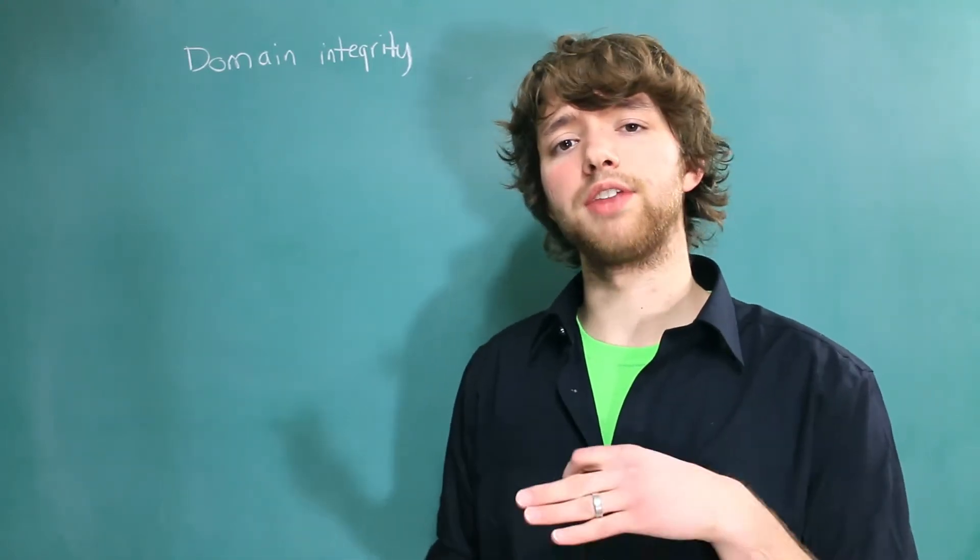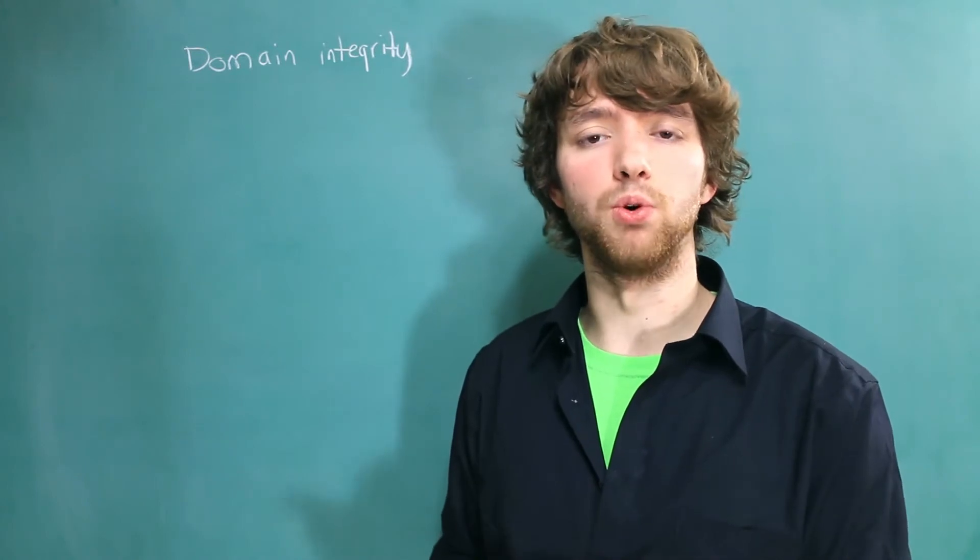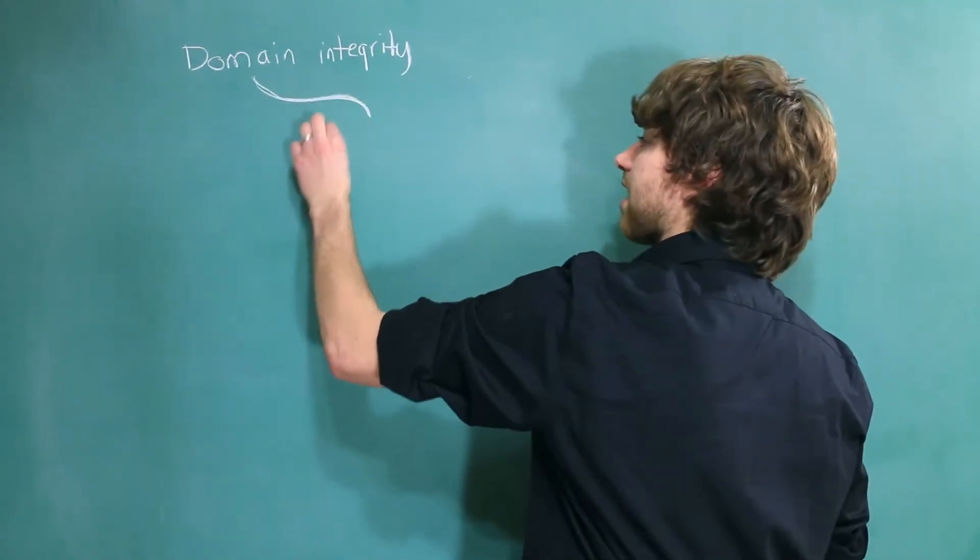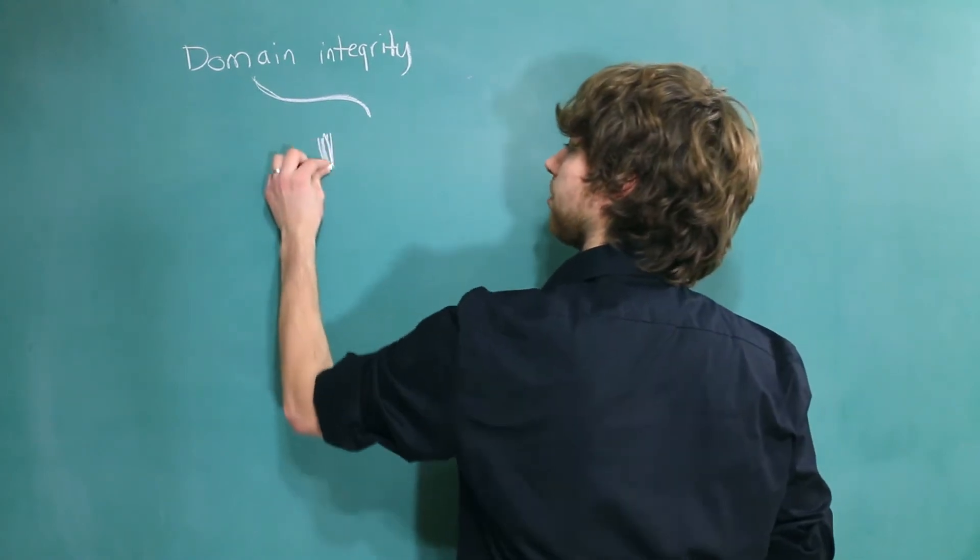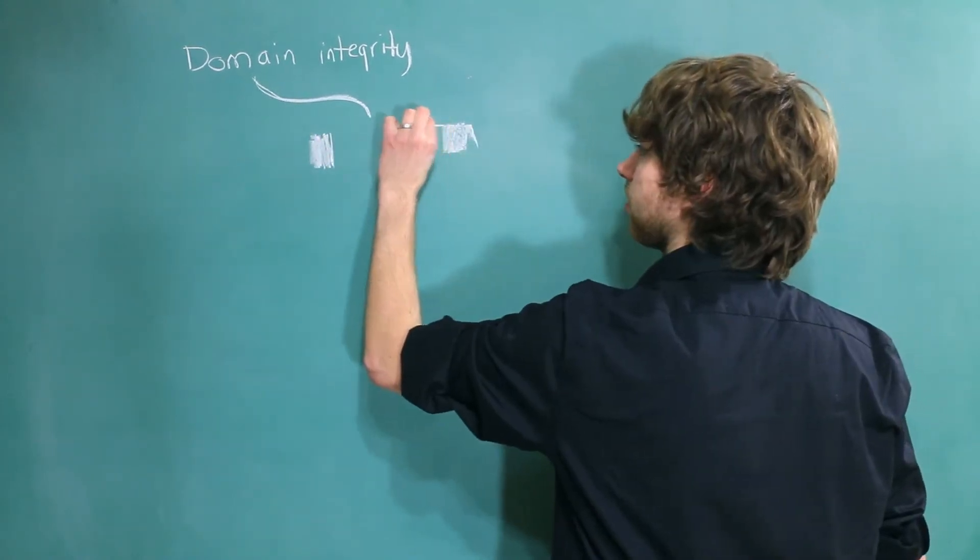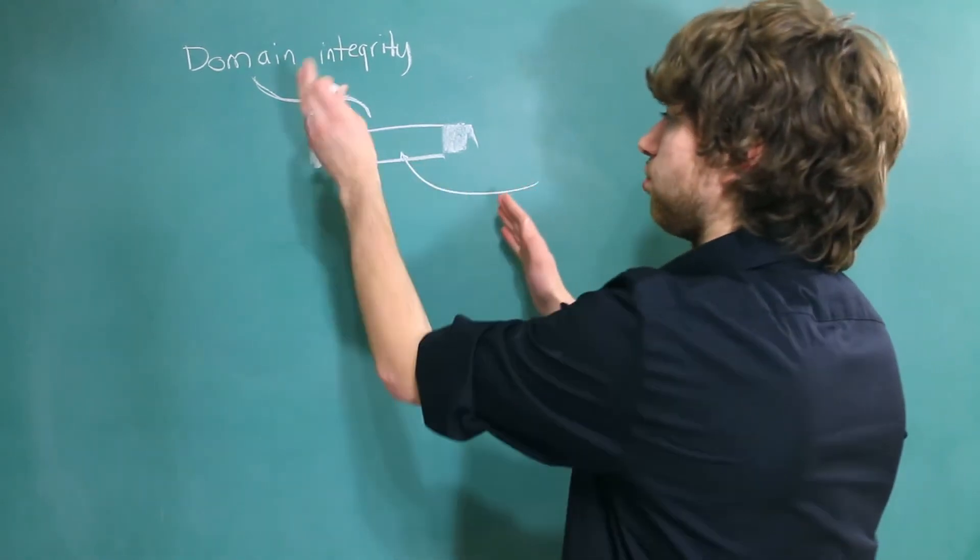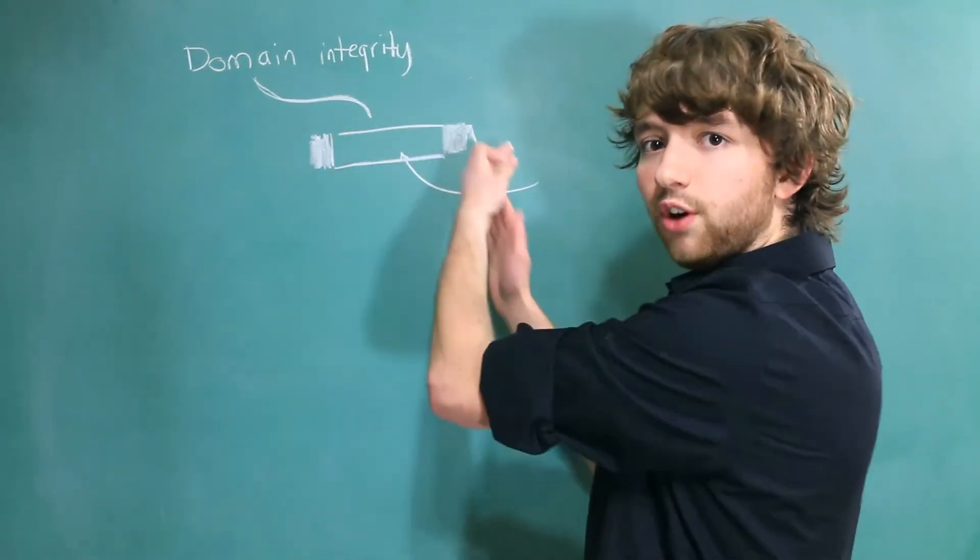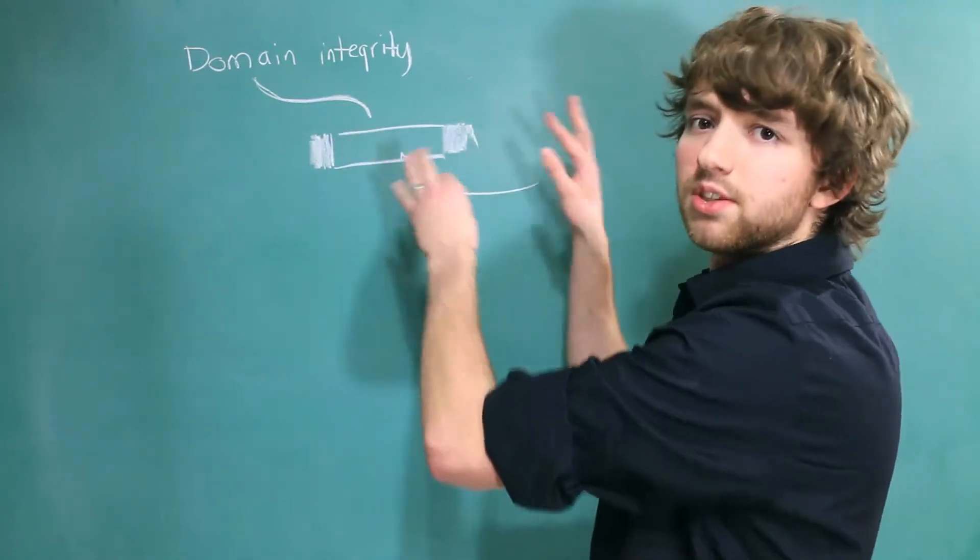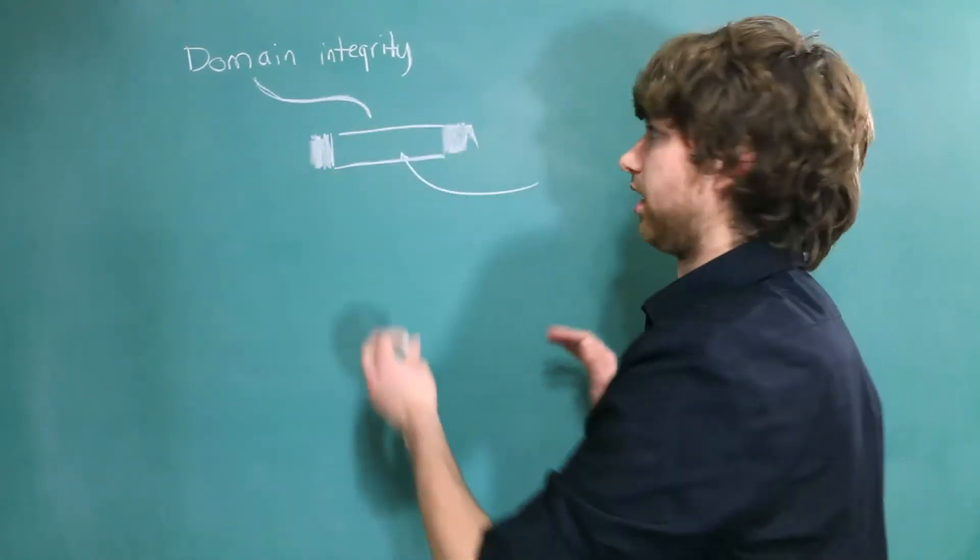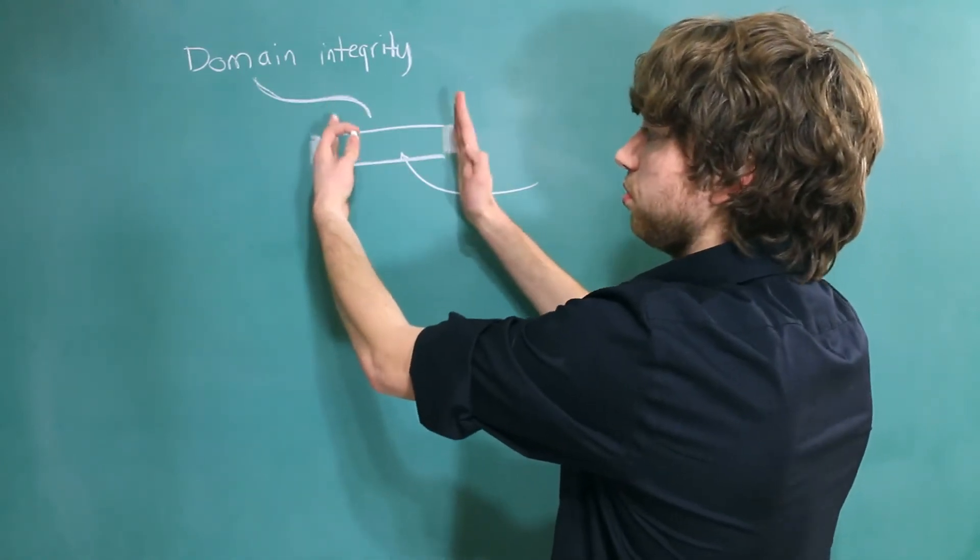We want to ensure that the data is as close as possible to what's expected. So the domain establishes what's not allowed and what is allowed. We want to make sure all of our data fits inside of here and it doesn't go too far this way or too far that way. This might make sense with numbers, like not too low or not too high, but I'm just kind of drawing this generally. We've got to make sure we fit within the rules.